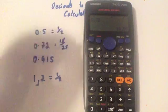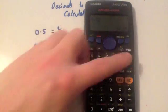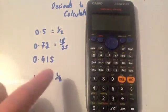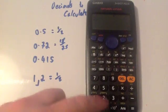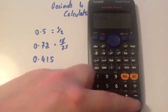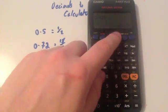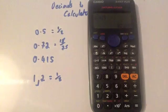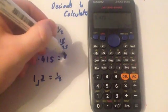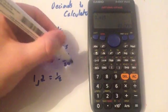Finally, 0.415. So you do 0.415, press equals, then press the SD button again and then you have got 83 over 200. So 83 over 200, and that's it.